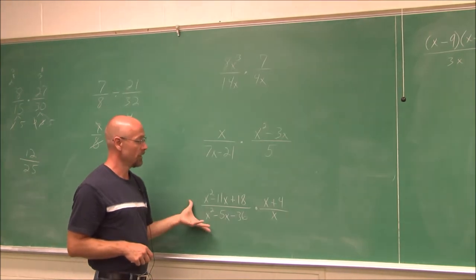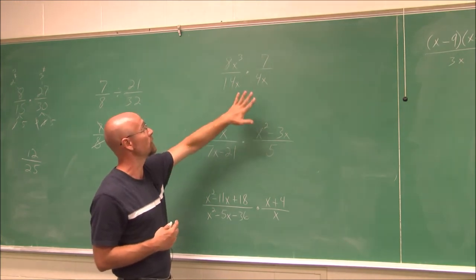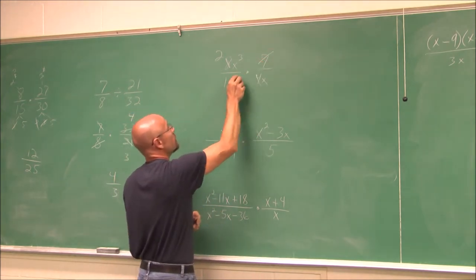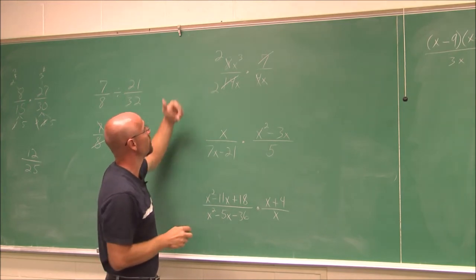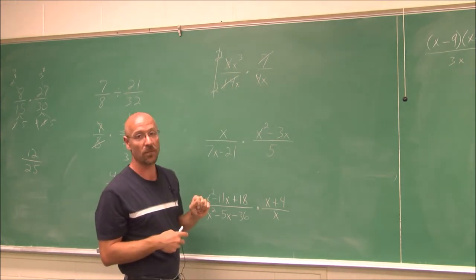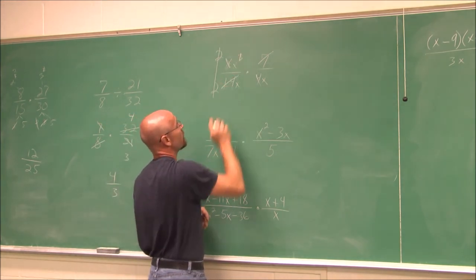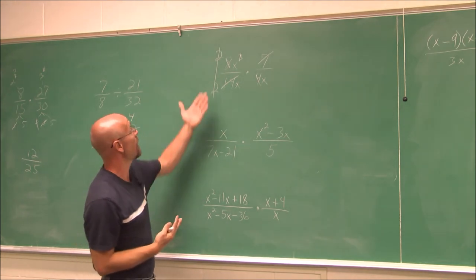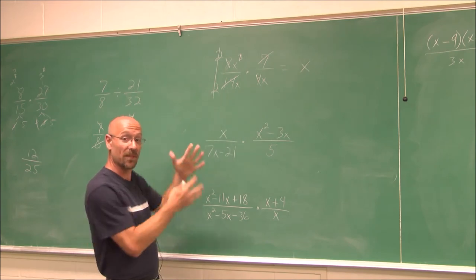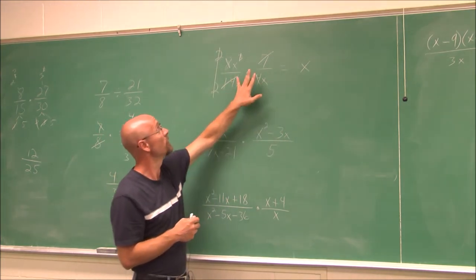For multiplication of rational expressions, we do the same thing — just reduce. We deal with the numbers first, then the variables one piece at a time. 4 goes into 8 twice, 7 reduces 14 to 2, and then 2 over 2 reduces to 1. For the variables, x cubed on top and two x's on the bottom: each x in the denominator cancels an x on top, leaving x to the first, which is just x.